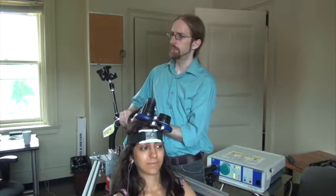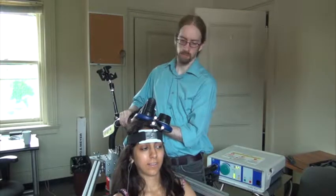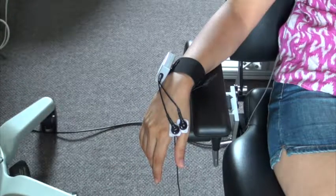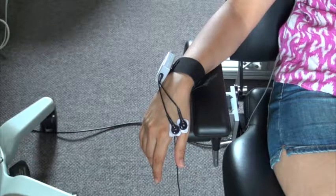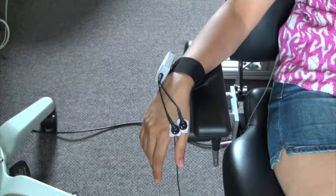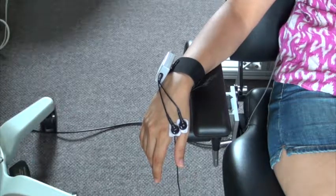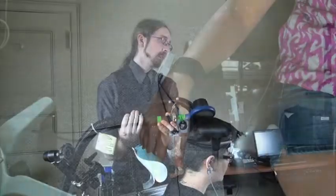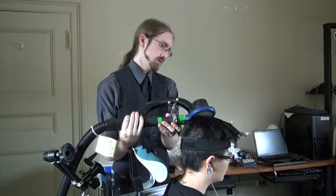Single pulses from the coil are used to stimulate the M1 hand area on the motor cortex in order to measure the RMT, or the minimum strength of the pulse required to cause a twitch in the participant's hand. This value is used to calculate the strength of stimulation for the targeted brain region for each participant.